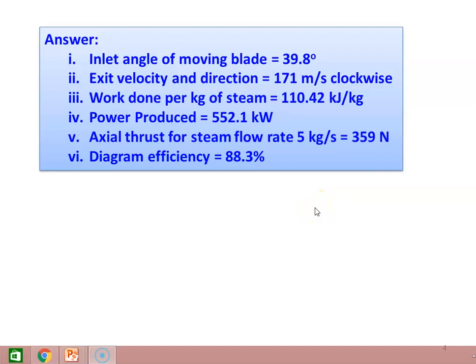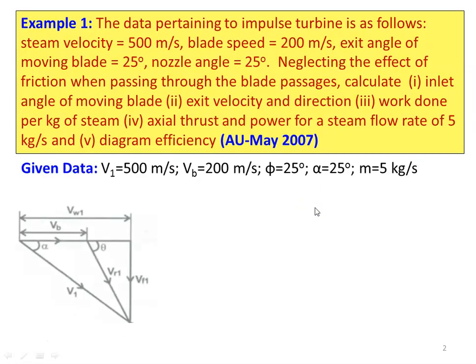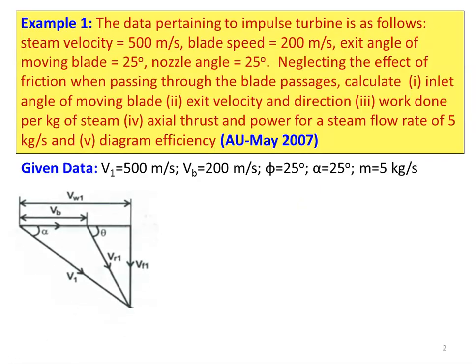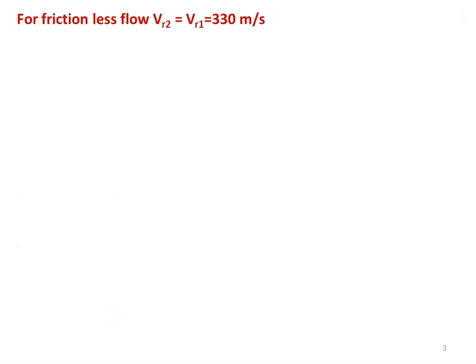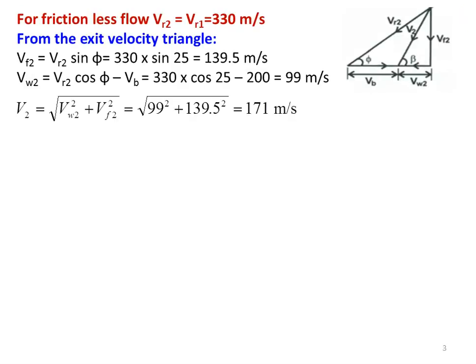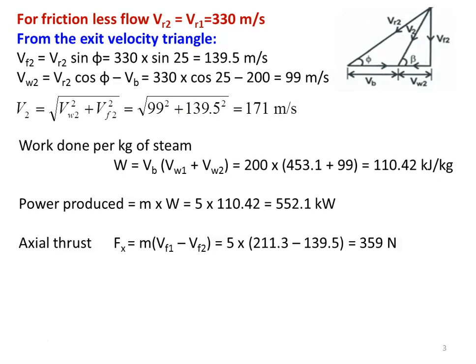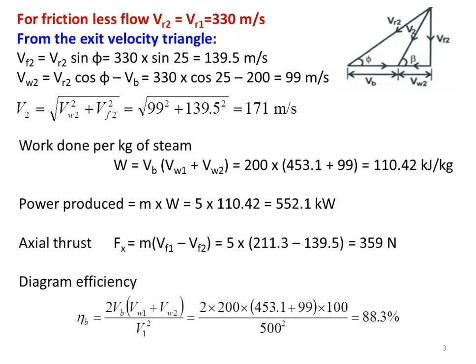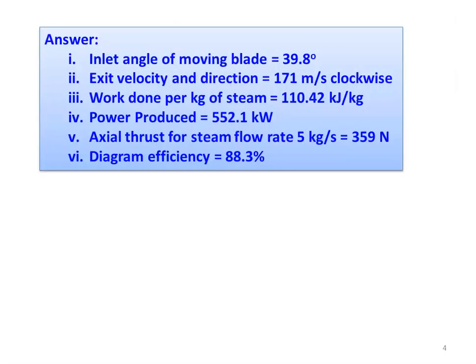The procedure is: write down the given data, draw the inlet velocity triangle, calculate the velocity vector, then take the exit velocity triangle, calculate the velocity vector, and then calculate the unknown parameters. Finally write down the results. This is how you have to proceed to solve problems on steam turbine.